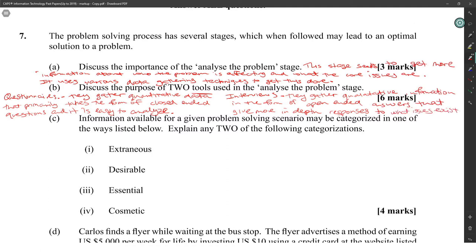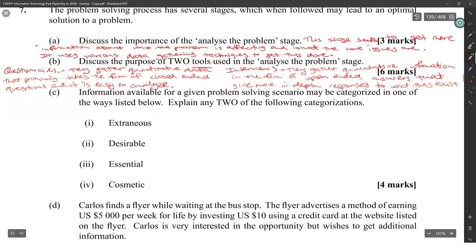Part C: Information available for a given problem solving scenario may be categorized in one of the ways listed below. Explain any two of the following categorizations. The easiest to do is essential and desirable. Cosmetic is easy too. You need to do any one.